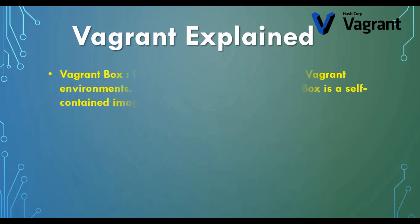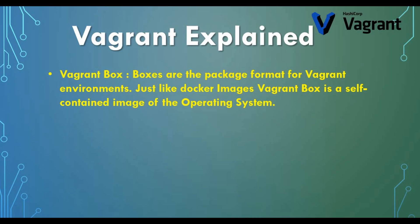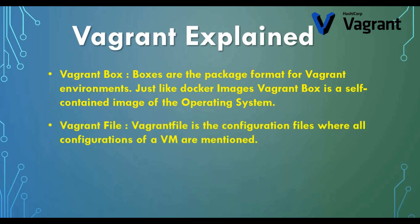Now let's cover some key terminologies. First, Vagrant Boxes — boxes are the package format for a Vagrant environment, just like Docker images. They are self-contained images for an operating system. For example, different people can customize a CentOS image, create their own Vagrantfiles, convert it to a Vagrant box, and upload it to the repository. You can then just pull that box and spin it up on your computer.